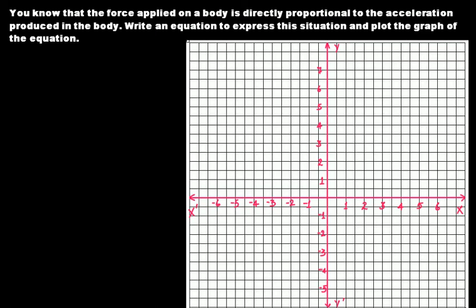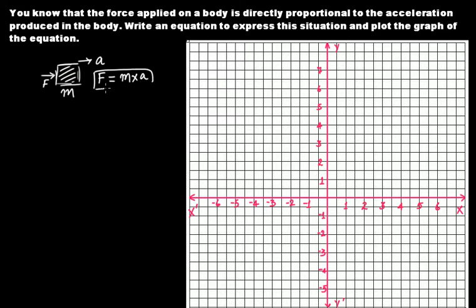Let's bring our graph here. We have the x-axis and the y-axis with numbers plotted on both axes. It's saying that the force applied on a body is directly proportional to the acceleration produced in the body. If this is our body with mass m, and a constant force is applied on it, and it moves with an acceleration a, we know that force equals mass times acceleration — F = ma.